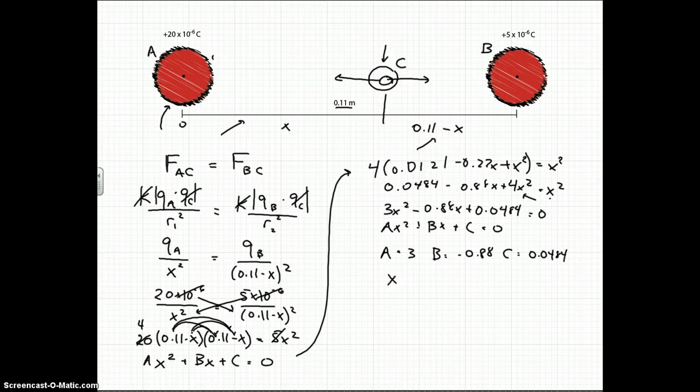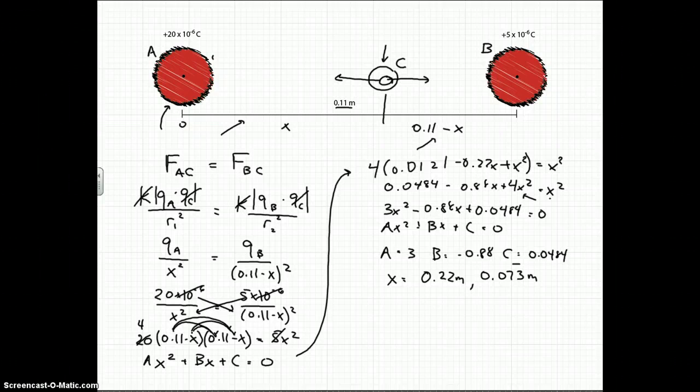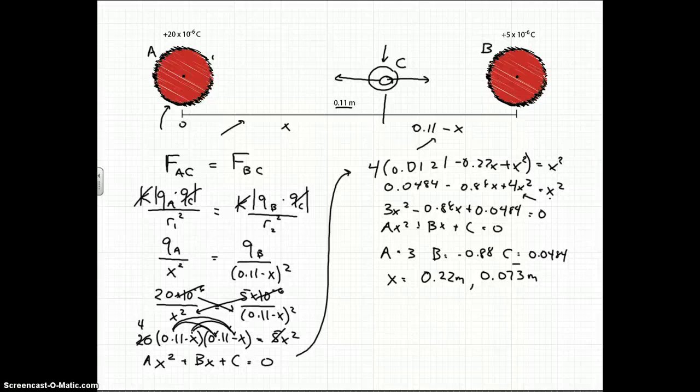And what you're going to do is you're going to actually get two different x values. You're either going to have 0.22 meters or you're going to get 0.073 repeating meters. Now one of these is going to make sense. We said that we were going to put it in between the two charges and 0.22 would be double this original distance here. So this one actually can't be true. So the only one we're left with is 0.073 repeating, and that would be somewhere around where actually I placed it. So there you go. That's the answer, and that's how you solve superposition in the equilibrium problem with force.